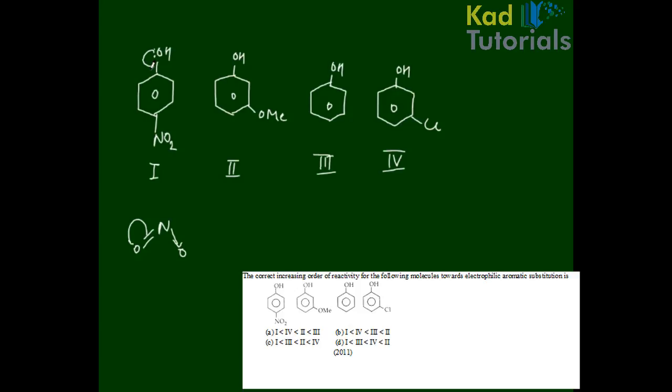Here is the lone pair and this is the lone pair. So here we have an electron donating group - oxygen in OME. When the lone pair donates into the ring, the ortho and para positions become negatively charged, so the electrophile will attack more readily at those positions.